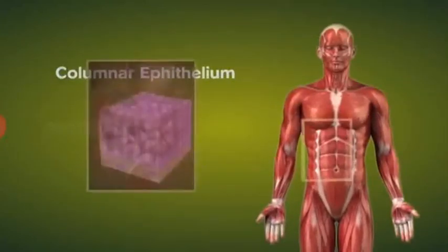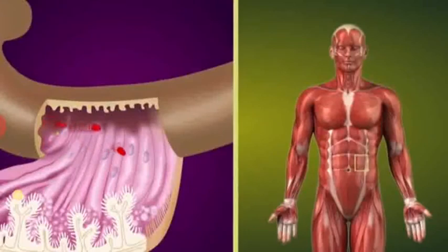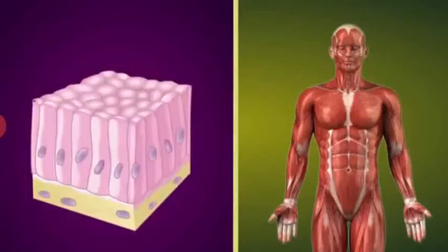Columnar epithelium acts as an impermeable barrier against any bacteria that could be ingested but is permeable to necessary ions. It is tall and shaped like a column.